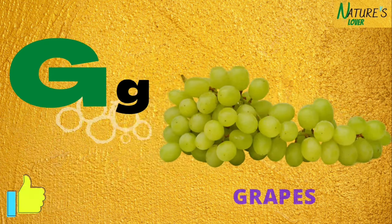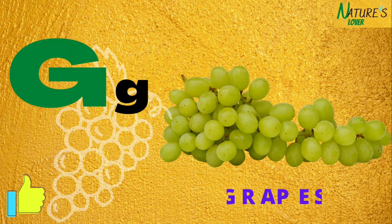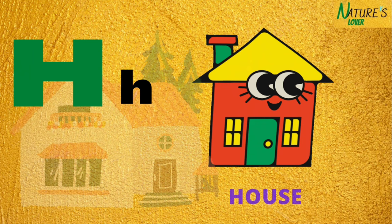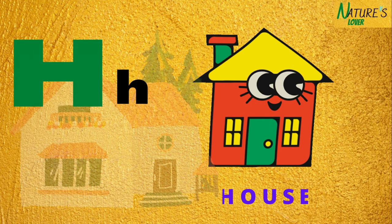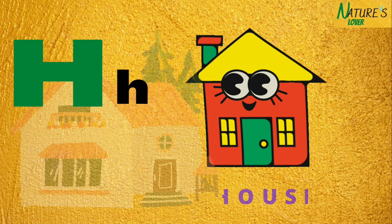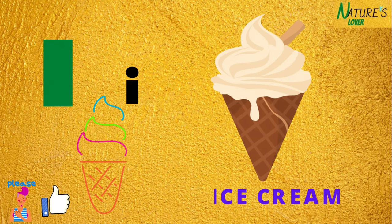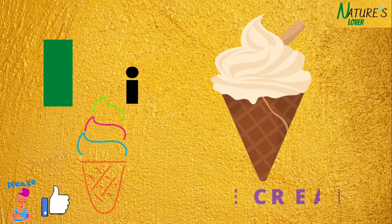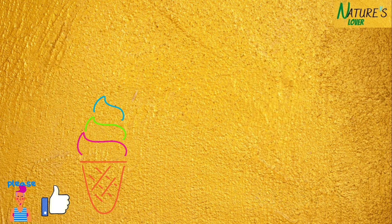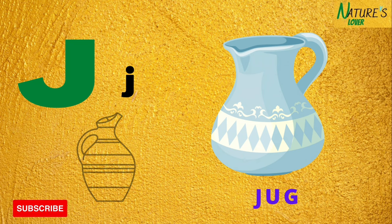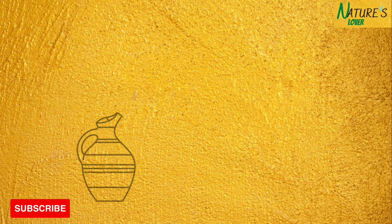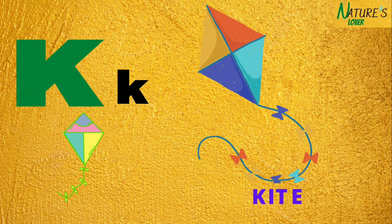G for grapes, H for house, I for ice cream, J for jug, K for kite.